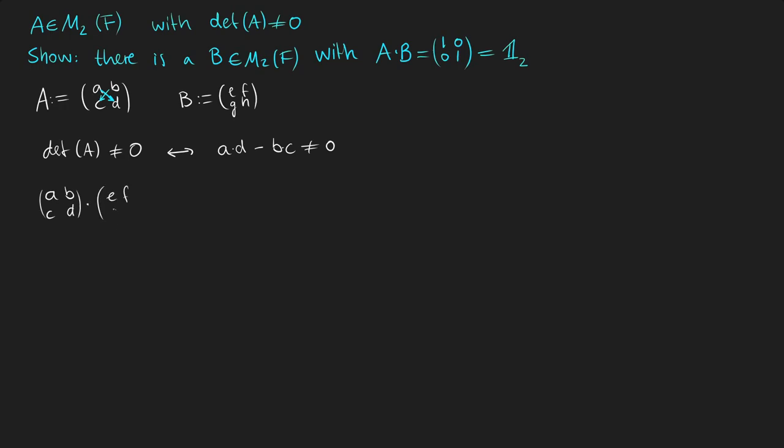We also know that the matrix A times the matrix B should be equal to the identity matrix. So let's calculate the result of the matrix A times the matrix B. In the first matrix which is A we need to go through the rows from left to right, and in the second matrix which is B we need to go through the columns from top to bottom.